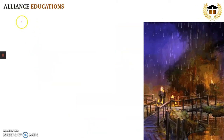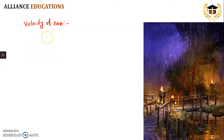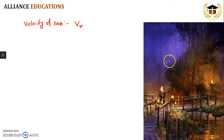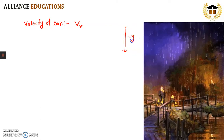First, we will see some terminology. What is meant by velocity of rain? When we use this term, it means velocity of rain relative to the ground. Velocity of rain is represented as vr — it is velocity of rain with respect to the ground. As you can see, rain drops fall vertically downwards, so in this case we can represent this as minus yj, where minus j represents the unit vector along the y-axis.